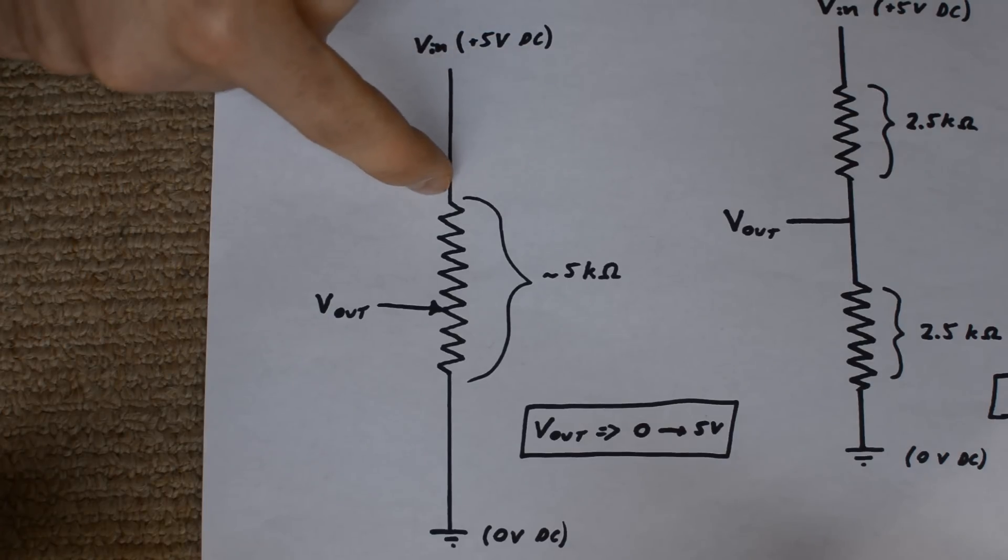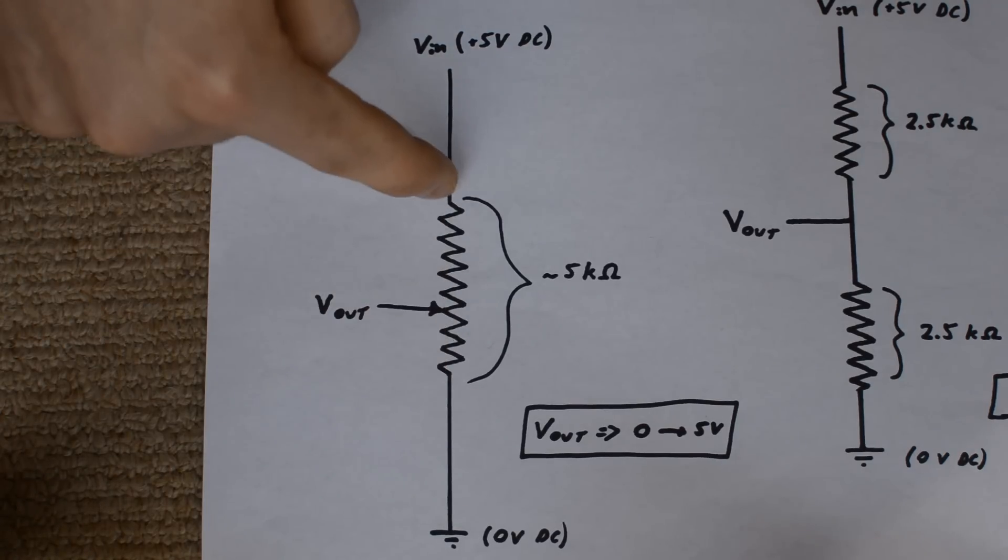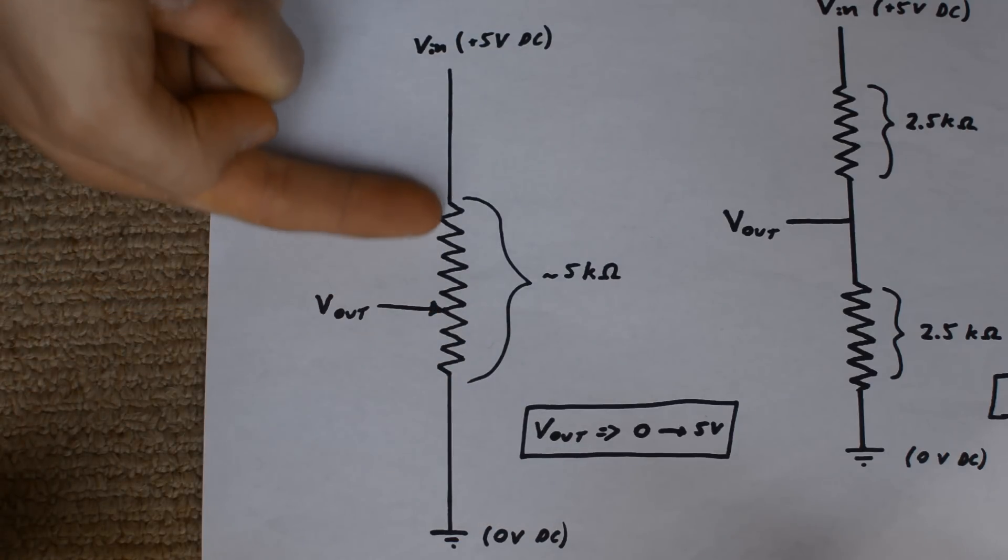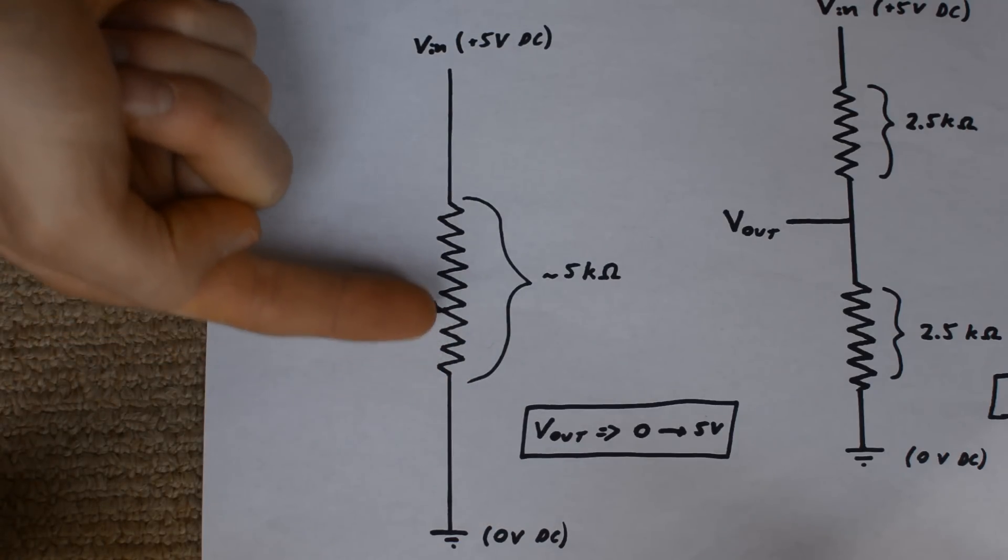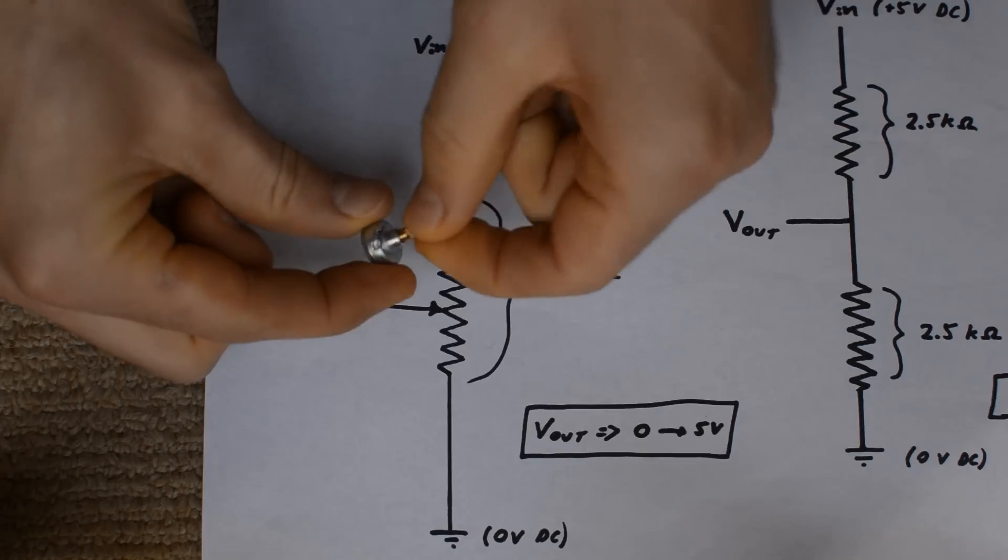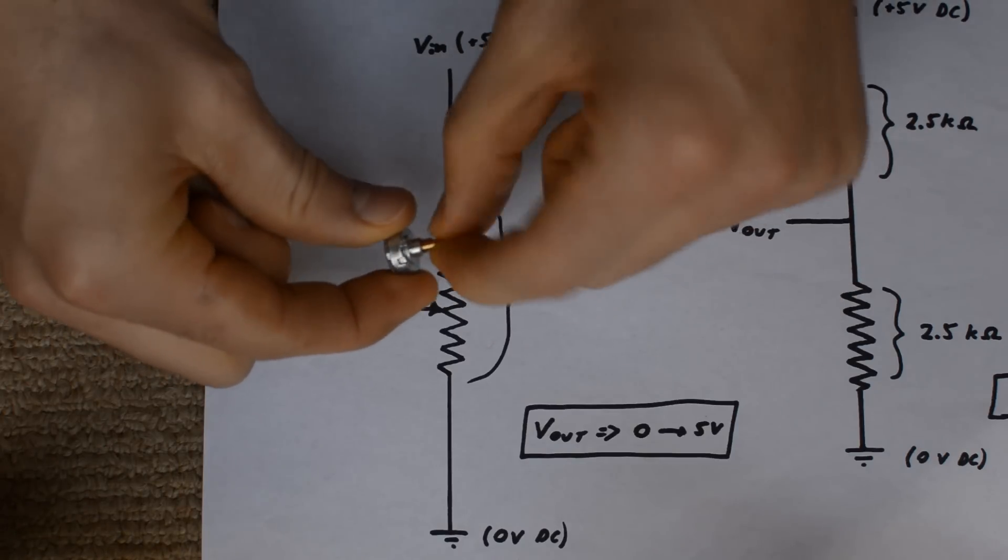So at the top here, we would have five volts DC coming in, and at the very bottom here the voltage would get dropped all the way down to zero volts. So as this V out pin sweeps along here, it sort of taps off into different voltages along the way. It can sweep from anything from five volts all the way down to zero volts. So that's what that 180 degree range gives us, anything from five volts all the way down to zero volts.